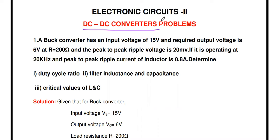There are three types of DC to DC converters: one is a buck converter, another is a boost converter, and then the buck-boost converter. The buck converter is nothing but a step-down converter — it converts a higher DC voltage into a lower DC voltage. For example, 10 volt DC converted into 5 volt DC is called a buck converter.